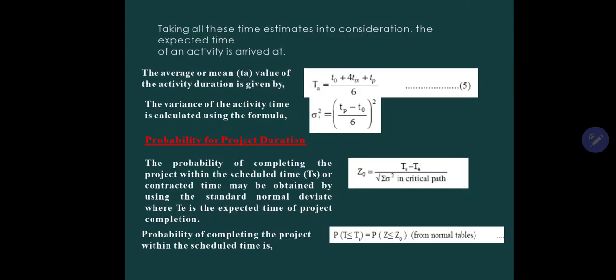Taking all these time estimates into consideration, the expected time of an activity can be calculated by this formula: T0 plus 4TM plus TP divided by 6 will give the time estimate, that is the average or mean value of activity duration.